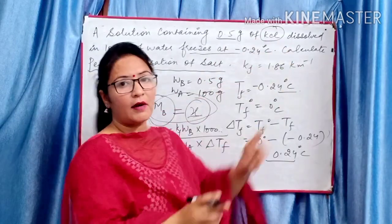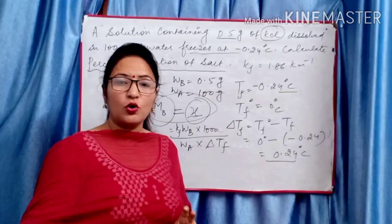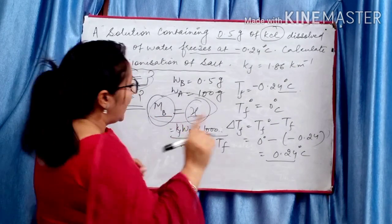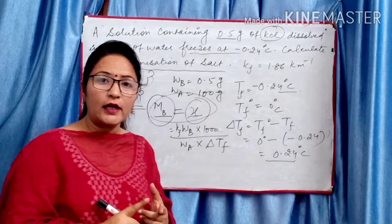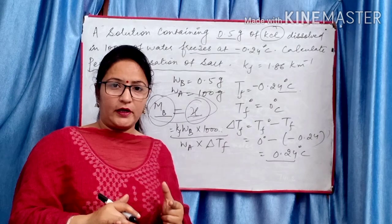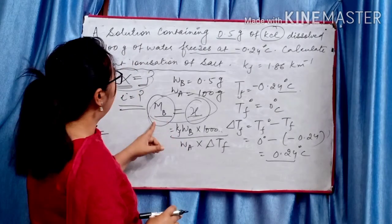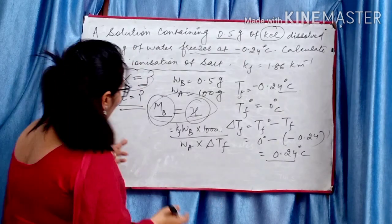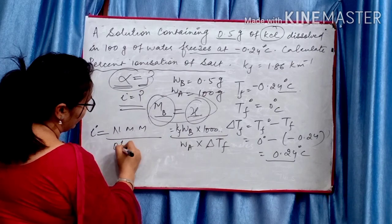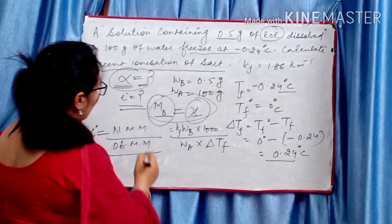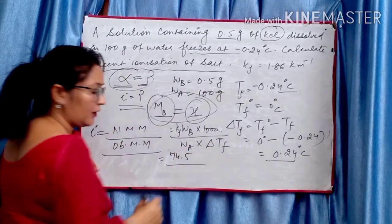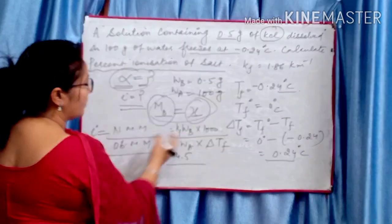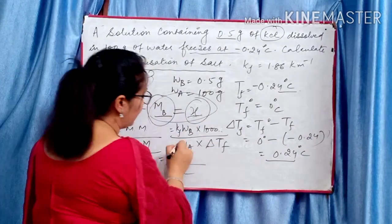Now we have the observed MB = X, and the normal molar mass of KCl = 39 + 35.5 = 74.5. The Van't Hoff factor i = normal molar mass / observed molar mass = 74.5 / X, since colligative properties are inversely proportional to molar mass.